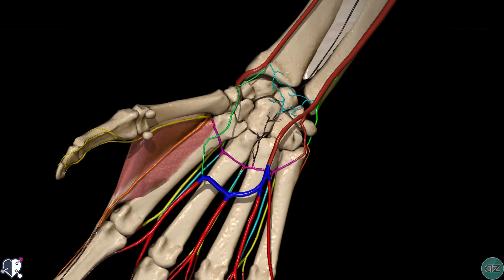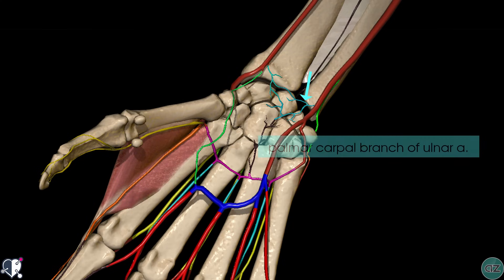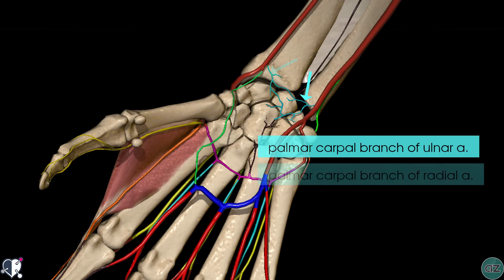Beginning with the ulnar artery and its branches: this branch highlighted in light blue coming off the ulnar artery is the palmar carpal branch of the ulnar artery, and this anastomoses with its counterpart, the palmar carpal branch of the radial artery.